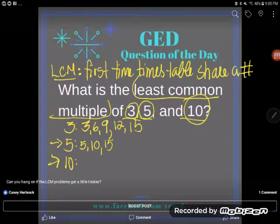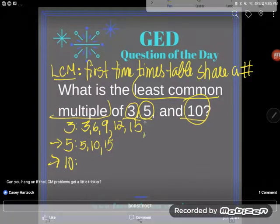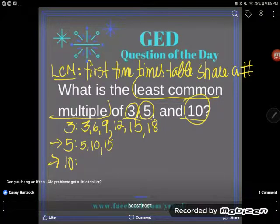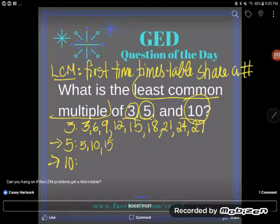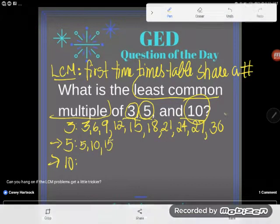But shoot, it's not on the 10 times tables, so I'm gonna keep going. 18 - 16, 17, 18, sorry - 19, 20, 21. Of course the next one would be 22, 23, 24, and you might be thinking oh my gosh, am I never gonna get there?